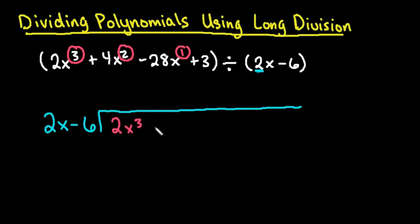I would put the 2x cubed plus 4x squared minus 28x plus 3. And like I said, if you were missing any terms, like if it went 4, 2, 1, 0, then you would have to put in a 0 for any missing degrees.